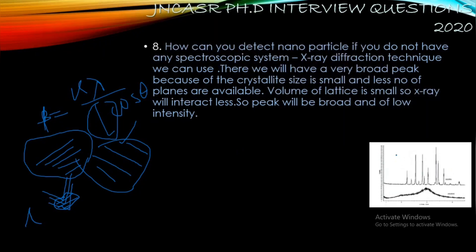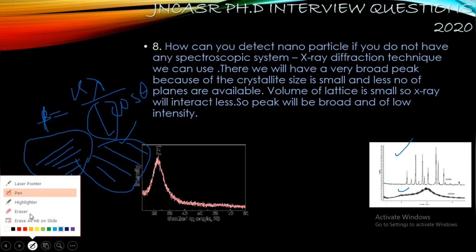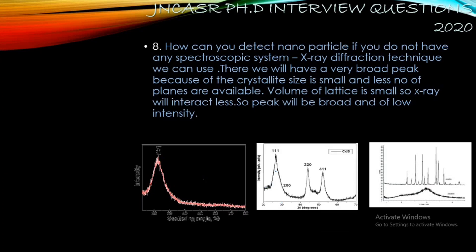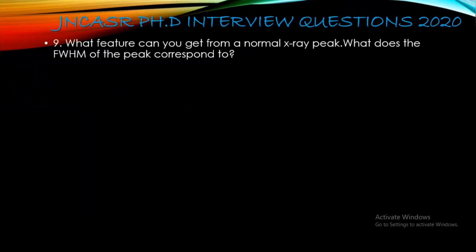For a polycrystalline bulk sample, you get sharp high-intensity peaks in the intensity versus 2θ plot. For amorphous material, there is a hump-like structure with very low intensity. For nanoparticles, the peak is broad and intensity is quite higher than amorphous. Another example shows nanoparticles where different domains are available — not a single domain but many domains.